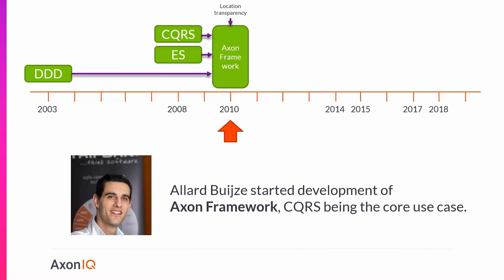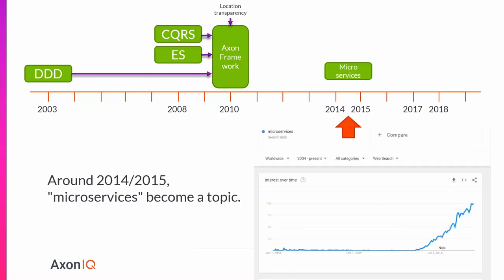The key thing is that these concepts have been around for a long time. They went into Axon Framework, developed by our founder and CTO. CQRS was one of the core use cases. For quite a long time, Axon Framework was kind of like a hobby — used a little bit in production — but didn't really become big until 2014 and 2015.